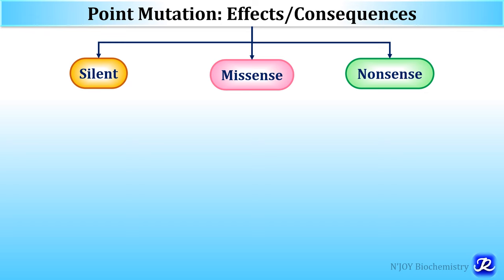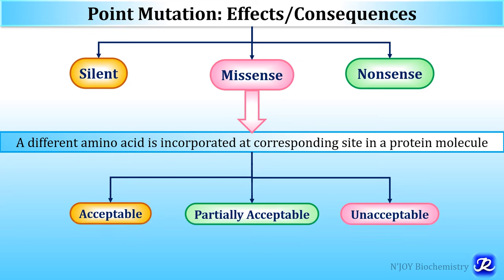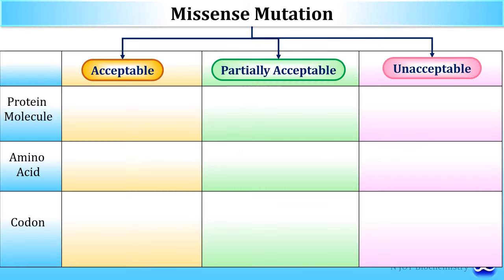What is missense mutation? In missense mutation, a different amino acid is incorporated at the corresponding site in the protein molecule. Missense mutation can be acceptable, partially acceptable, or unacceptable. Let us see examples of each type of missense mutation.